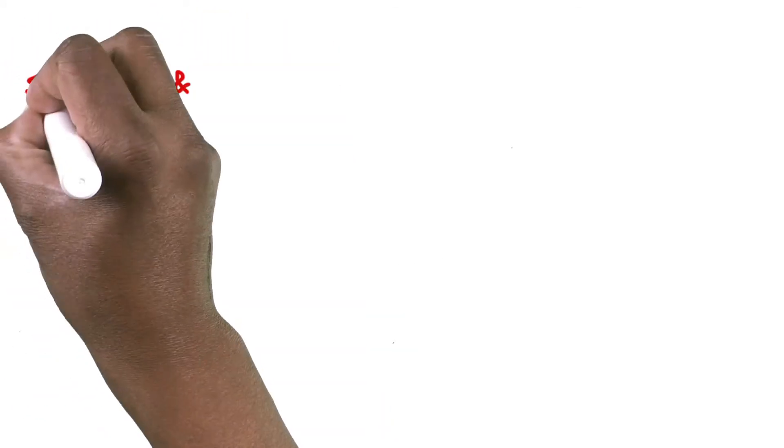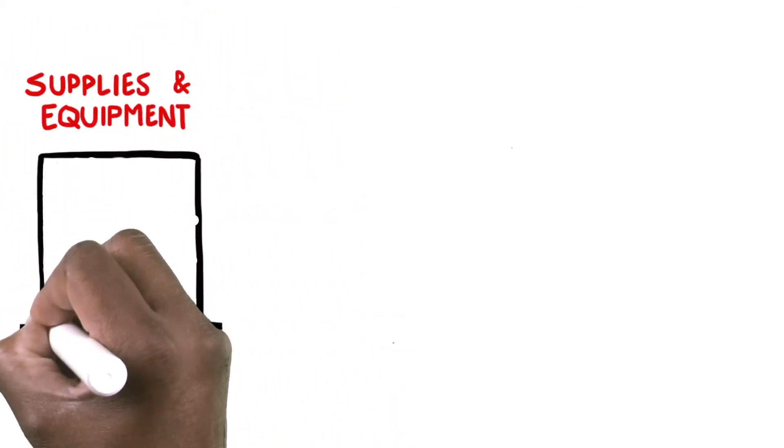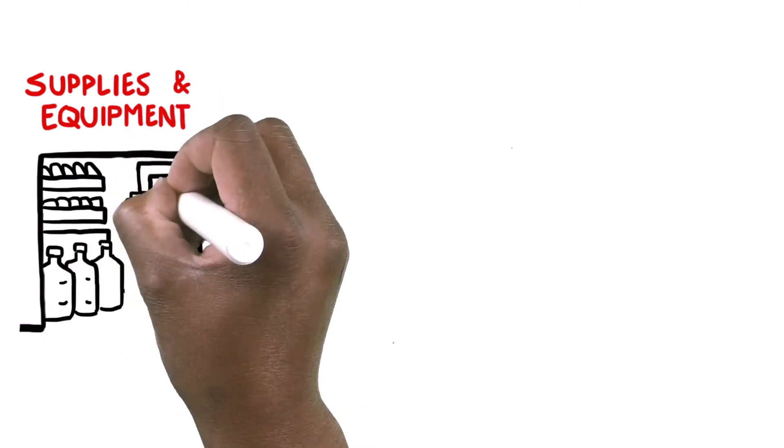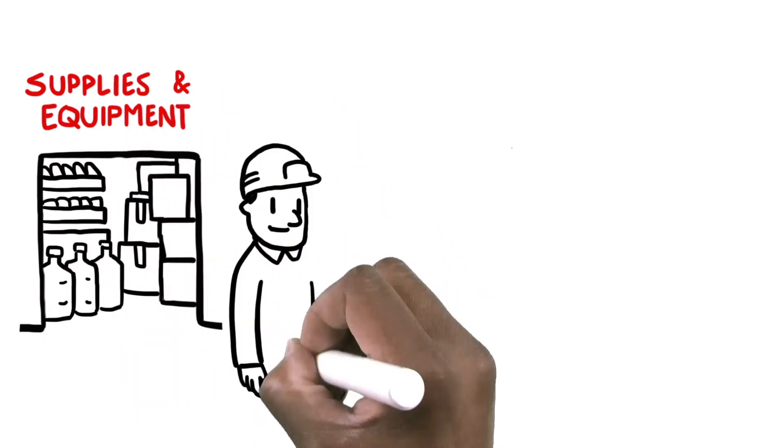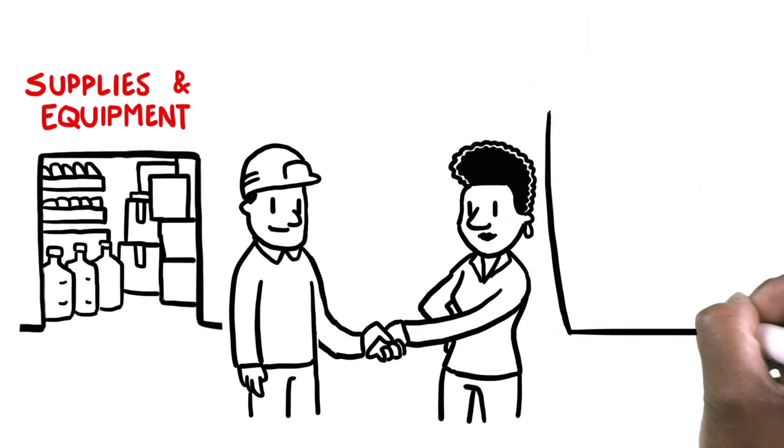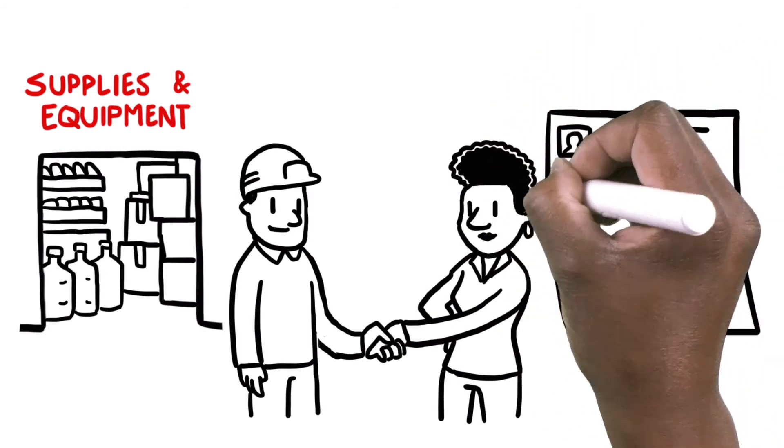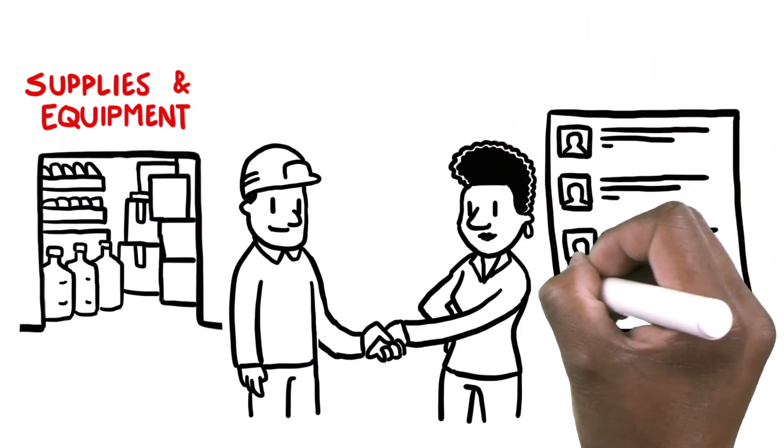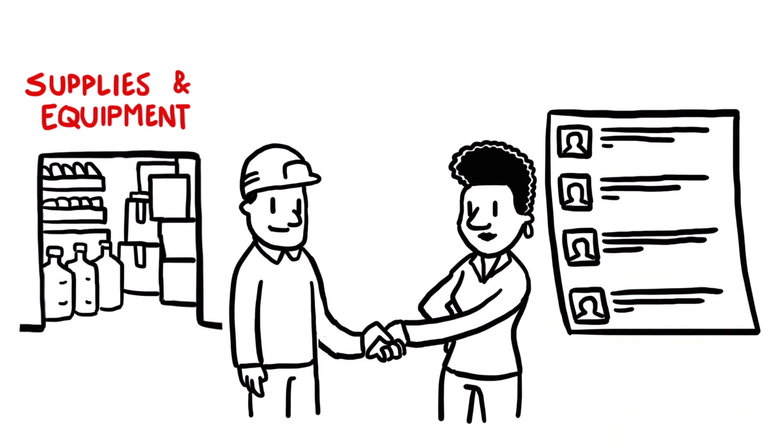Three: stockpile and position supplies and equipment so they can be distributed quickly to emergency workers. Make agreements with contractors to release supplies when they are needed. Verify the list of people at risk and their bank details so they can receive emergency cash to take early action at home.